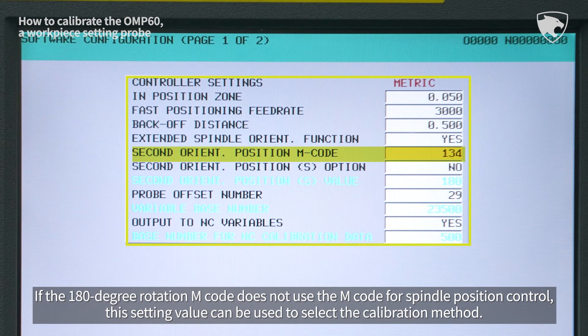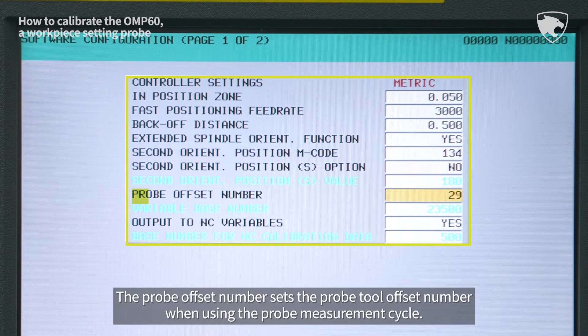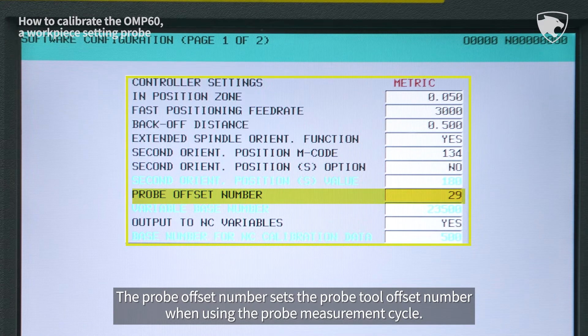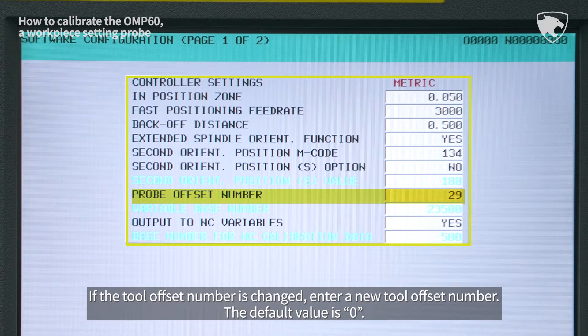If the 180 degree rotation M-code does not use the M-code for spindle position control, this setting value can be used to select the calibration method. The probe offset number sets the probe tool offset number when using the probe measurement cycle. If the tool offset number is changed, enter a new tool offset number. The default value is 0.